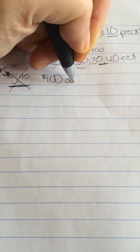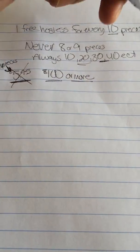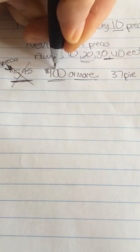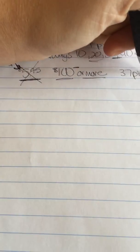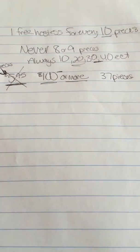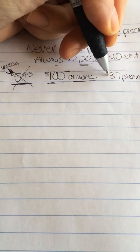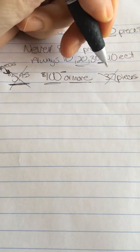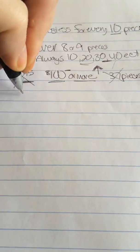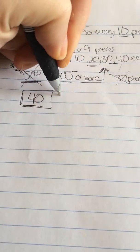Because shipping is free on any order of $100 or more. $100 equals out to be about 37 pieces because that $100 is before taxes. But like I said, we're not going to just order 37 pieces because of the hostess rewards, correct?